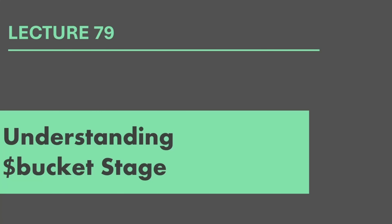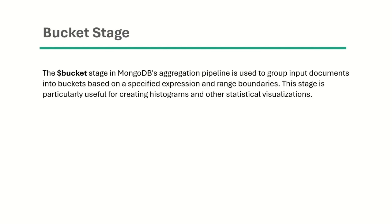Hello and welcome back. In this lecture, we are going to learn about another stage in the aggregation pipeline called the bucket stage. The bucket stage in MongoDB's aggregation pipeline is used to group input documents into buckets based on a specified expression and range boundaries. This stage is particularly useful for creating histograms and other statistical visualizations. Let's try to understand the bucket stage with an example.